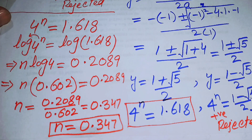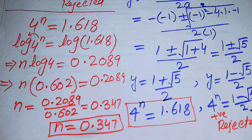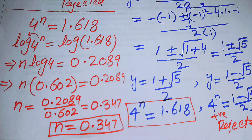So this is our final answer: n is approximately 0.347. Thank you so much for watching this video. Please subscribe to my channel for more exciting videos.